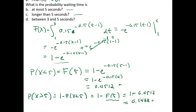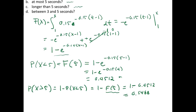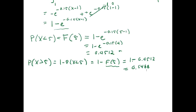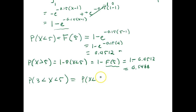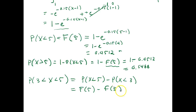The last problem asks for the probability that the waiting time is between 3 and 5 seconds. In notation: P(3 less than X less than 5) equals P(X less than 5) minus P(X less than 3), which equals F(5) minus F(3).